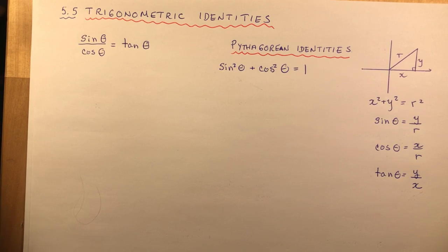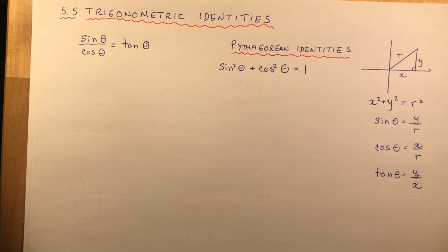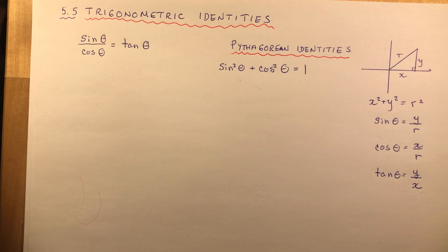Welcome to Chapter 5.5, a lesson on trigonometric identities. This is a section that a lot of students have trouble with, primarily because you don't spend enough time playing around with it. Trig identities are a lot of fun. When you figure out it's like a little puzzle — you want to prove that something is equal to the other side. It becomes a bit of a game. In grade 12 advanced functions there are much more complicated trigonometric identities to work with.